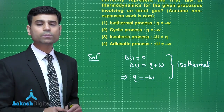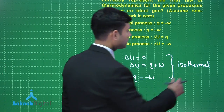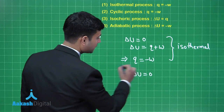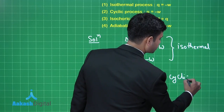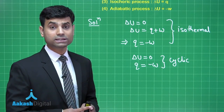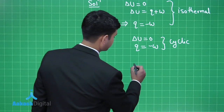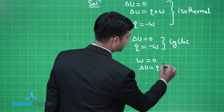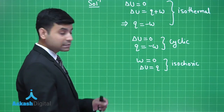For the cyclic process, the initial and final state of the system are the same, so all state functions have zero value. Therefore delta U = 0, and applying the first law of thermodynamics gives Q = -W, which is correct for a cyclic process. For the isochoric process, the change in volume is zero, so work done is also zero. Therefore delta U = Q, which is correct for an isochoric process.